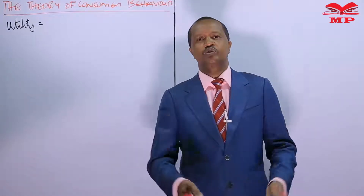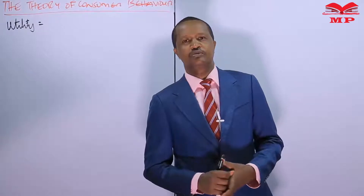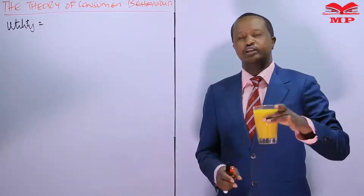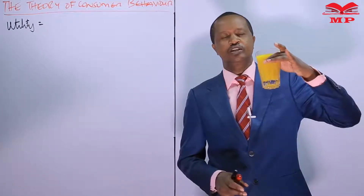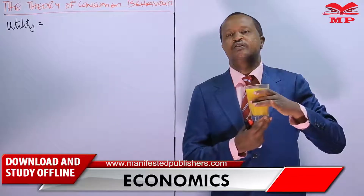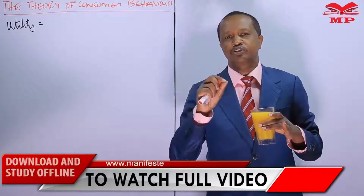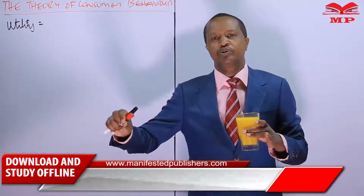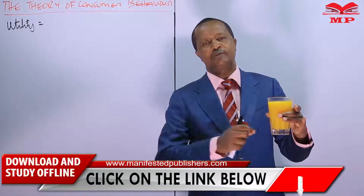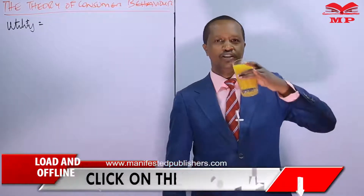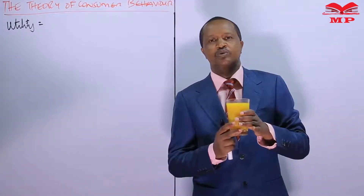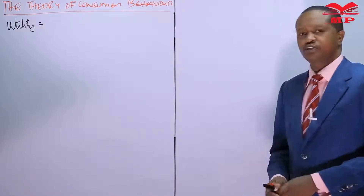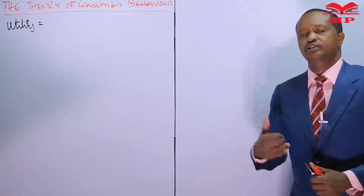Today I requested a glass of juice for a recap. As you drink the first glass of juice, you derive satisfaction from it. Under the cardinal approach, satisfaction is quantifiable and measurable. For example, the first glass of juice can be assigned 20 units of satisfaction. We also looked at the relationship between marginal utility and total utility.